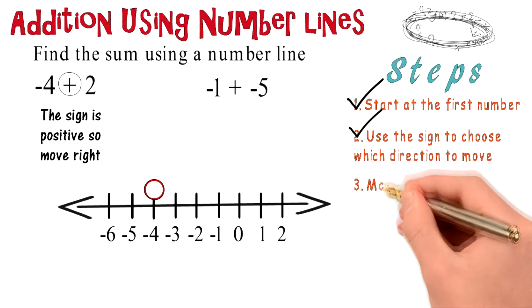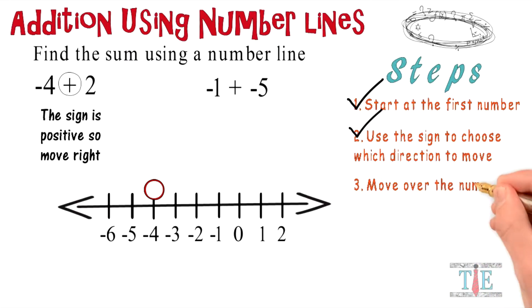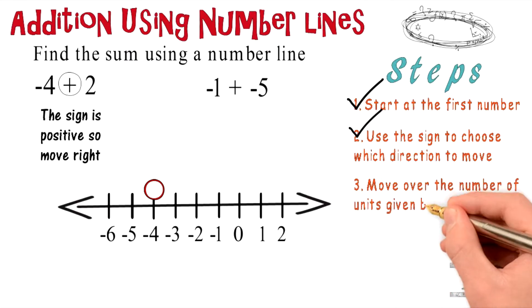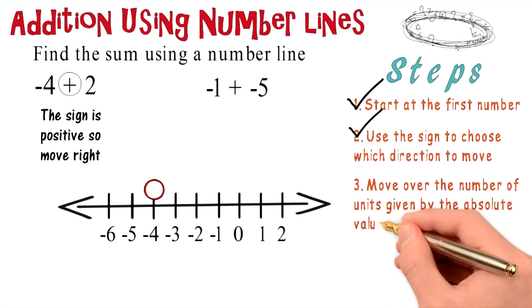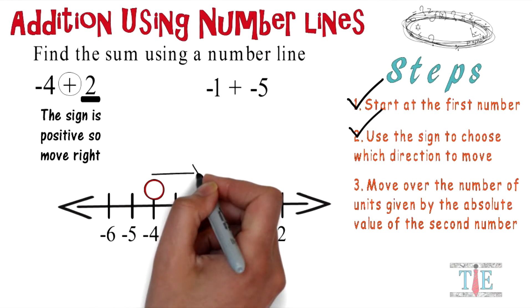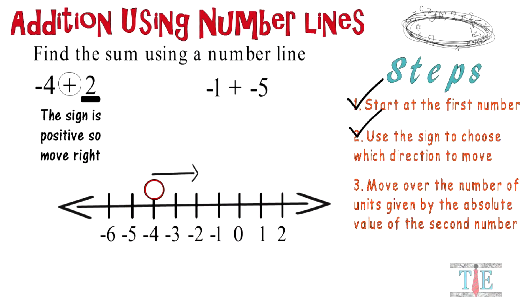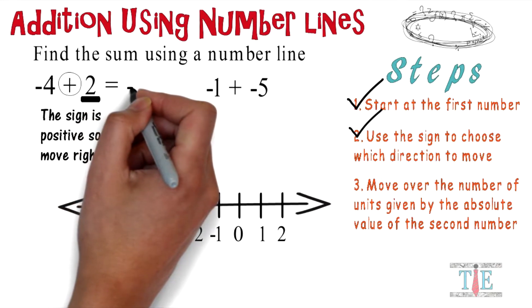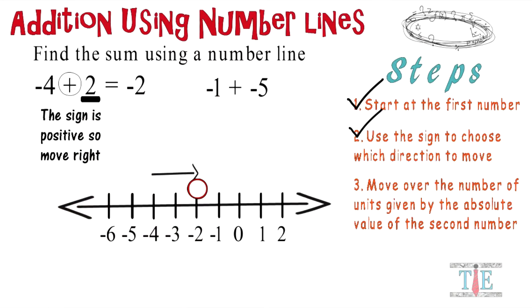Move on to step number 3. Move over the number of units given by the absolute value of the second number. The second number is 2, so we're gonna move over two spaces. We started at negative 4, we move over two spaces, and now we're at negative 2. Negative 4 plus 2 equals negative 2, and we can check off step number 3.